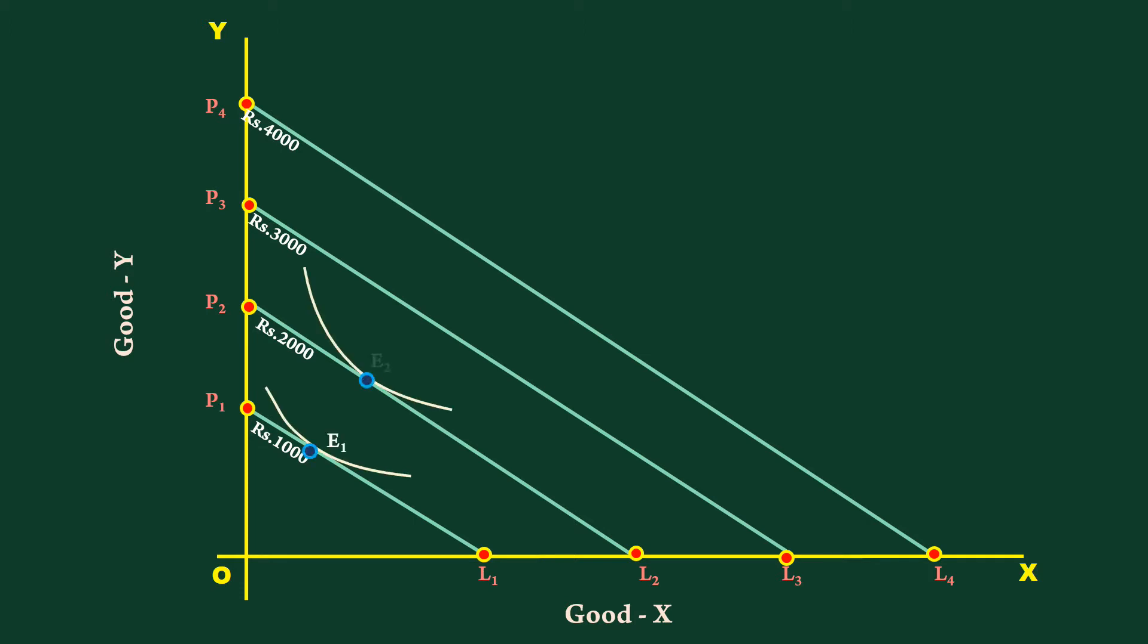E1, E2, E3, E4 are the equilibrium points at different levels of income. The curve joining these points is Income Consumption Curve.